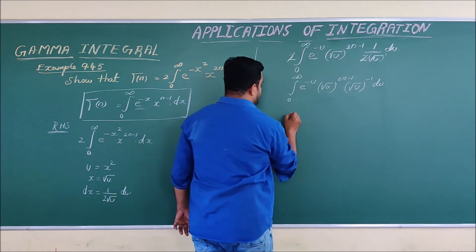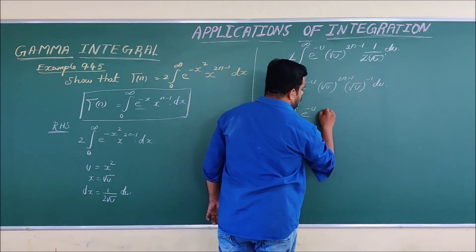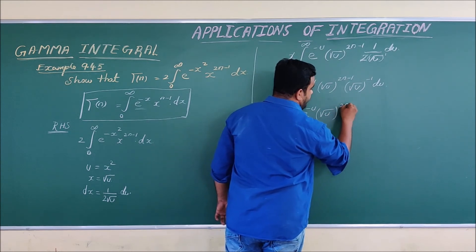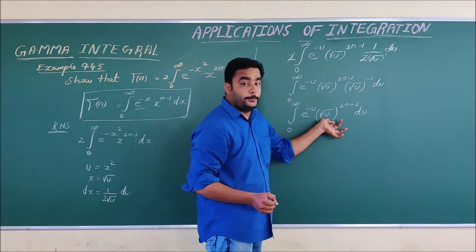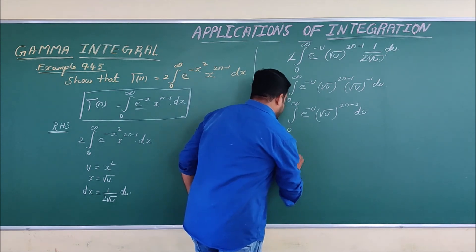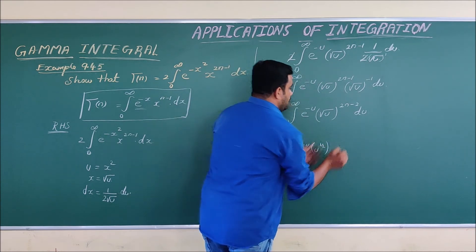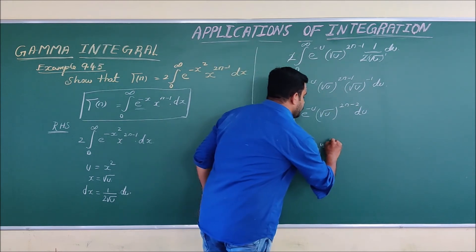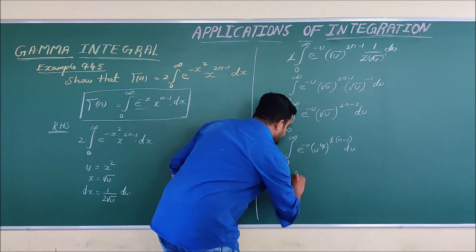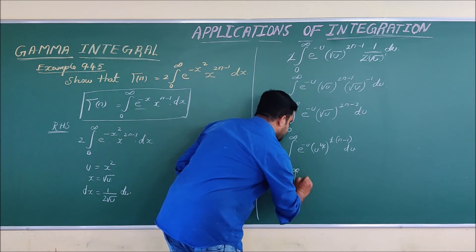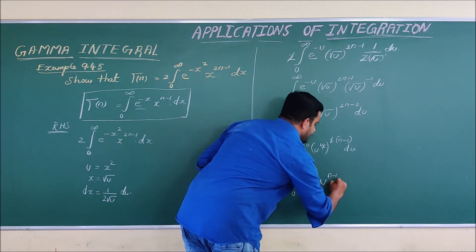We now combine the root u terms. Multiplying root u to the power of 2n minus 1 by root u gives root u to the power of 2n minus 2. Writing root u as u to the power of 1 over 2, we get u to the power of 1 over 2 times 2n minus 2, which simplifies to u to the power of n minus 1. The 2 in the denominator cancels, leaving the integral from 0 to infinity of e to the power of minus u, times u to the power of n minus 1, du.